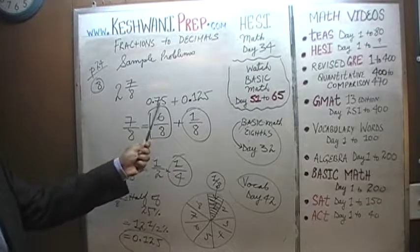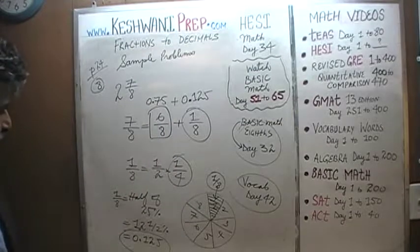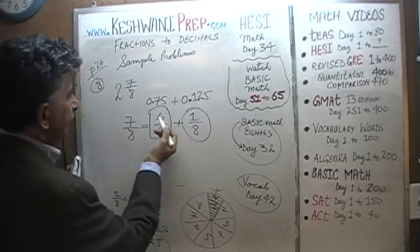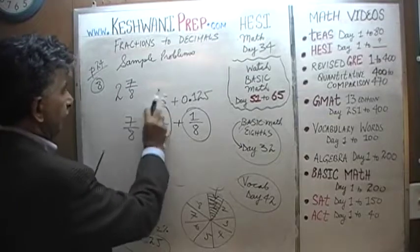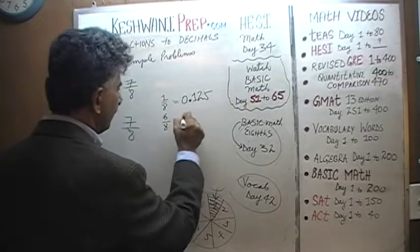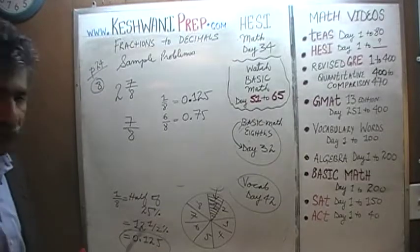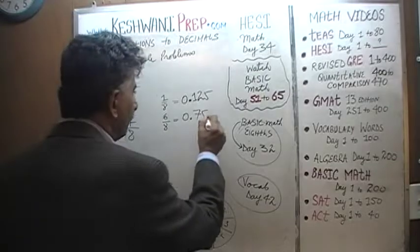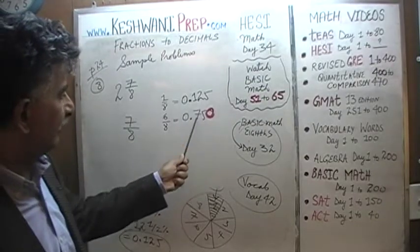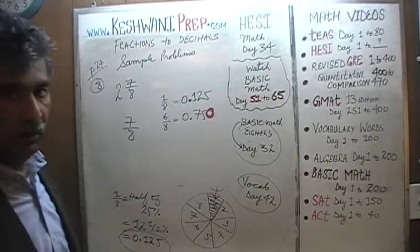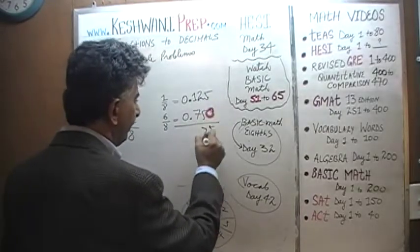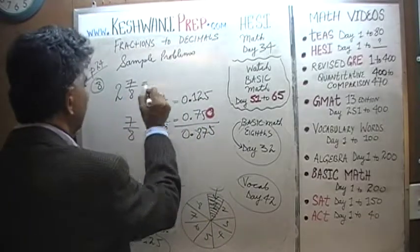We have our 6/8 as 0.75 and our 1/8 as 0.125 — we just need to add these two decimals. Now, 0.125 has three decimal places and 0.75 only has two, so let's add a zero to the end of 0.75 to make it 0.750. Then: 5 plus 0 is 5, 2 plus 5 is 7, and 1 plus 7 is 8. It is simply 0.875.